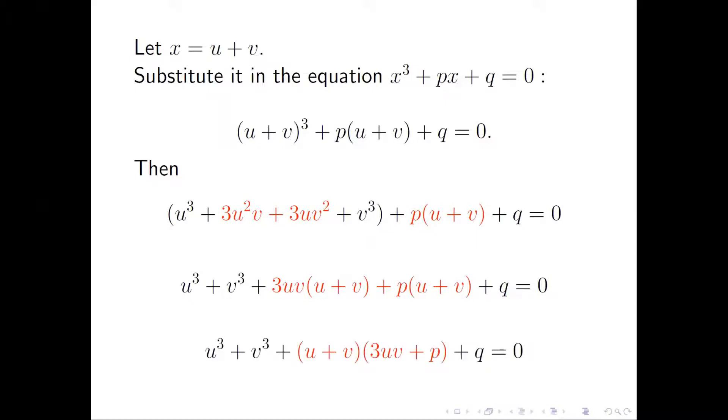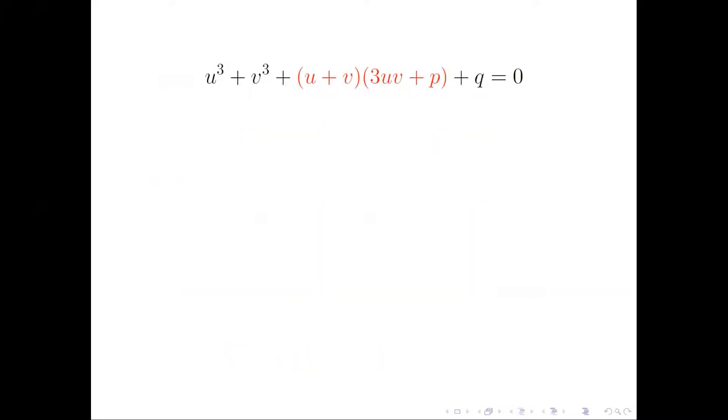Factor that out. We have u cubed plus v cubed plus u plus v times 3uv plus p plus q equals zero. This is the equation.